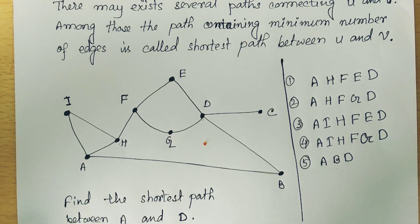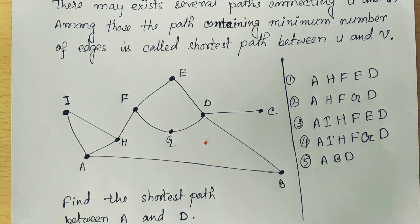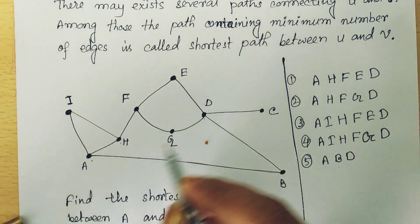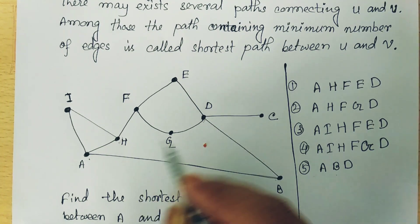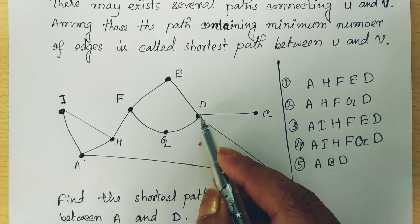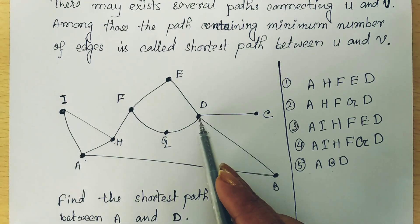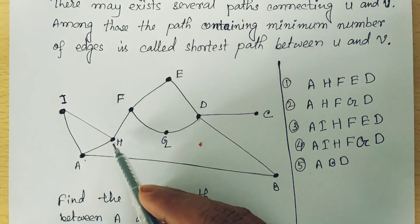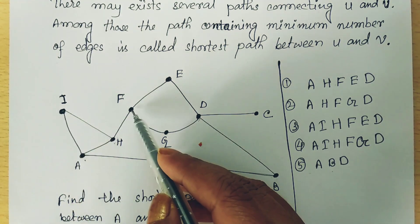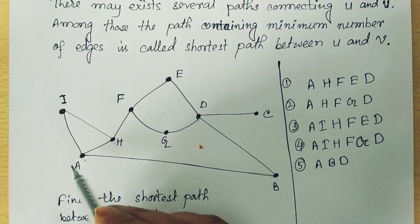Among those, the path containing the minimum number of edges is called the shortest path between U and V. For example, if this is the graph and we want to move from vertex A to vertex D, there are many paths available. One path is A to I, I to H, H to F, F to E, E to D.